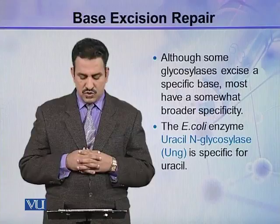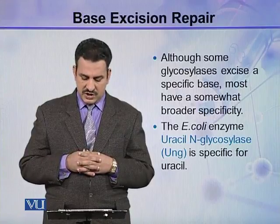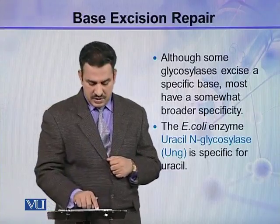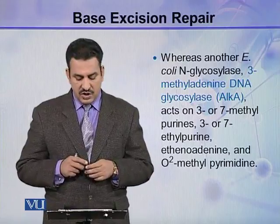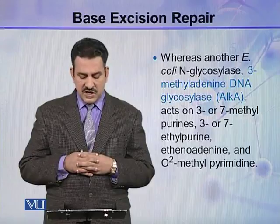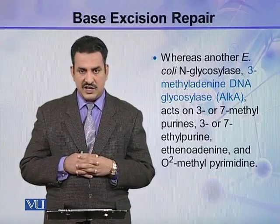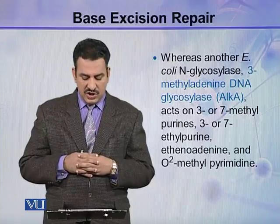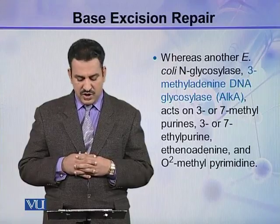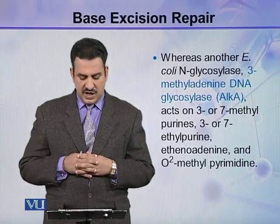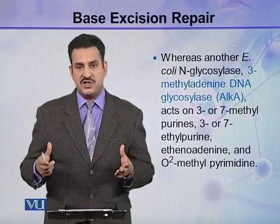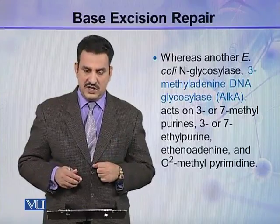The E. coli enzyme uracil-DNA glycosylase, or UNG, is specific only for uracil. While another E. coli N-glycosylase, 3-methyladenine DNA glycosylase — also called L-A — acts on 3- or 7-methylpurines, 3- or 7-ethylpurines, ethenoadenine, and O2-methylpyrimidine. So it has very broad specificity and can act on a number of altered bases.